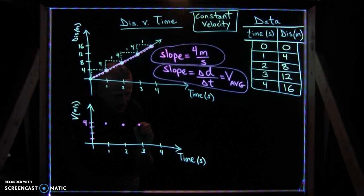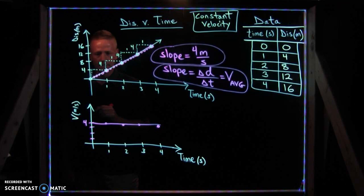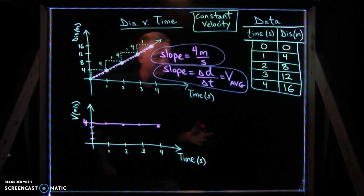And if you plot that, you'll get a nice horizontal line for all four seconds. Constant velocity, four meters per second.